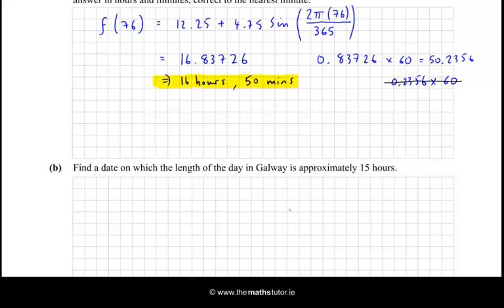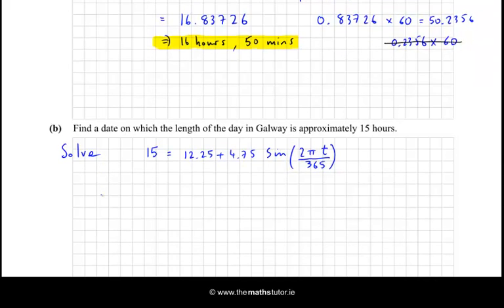Next question. Find a date on which the length of the day in Galway is approximately 15 hours. We're putting 15 in as the result and we're trying to solve for t. So let's just say 15 is the result and 12.25 + 4.75 sin(2πt/365), and now we're solving for t. Let's take the 12.25 to the left first. So 15 - 12.25 and that's going to be equal to 4.75 times sine of this fraction. So that gives us 2.75. Let's divide across by 4.75 as well, and what we're left with then is just sine of this fraction.